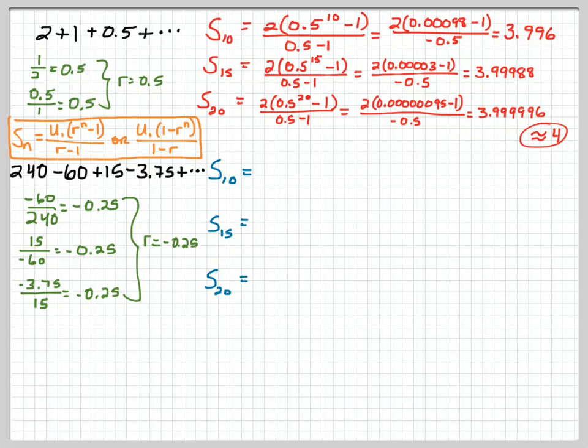So we're still going to use that same first summation formula, U of 1 times R to the Nth power minus 1 all over R minus 1. So we're going to plug in our values.